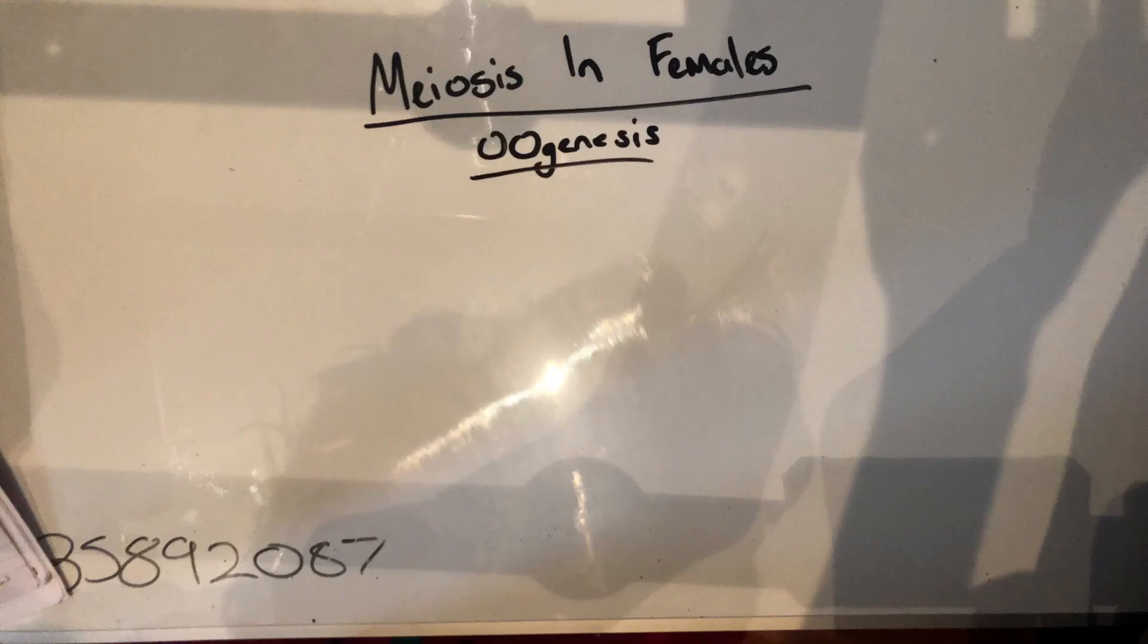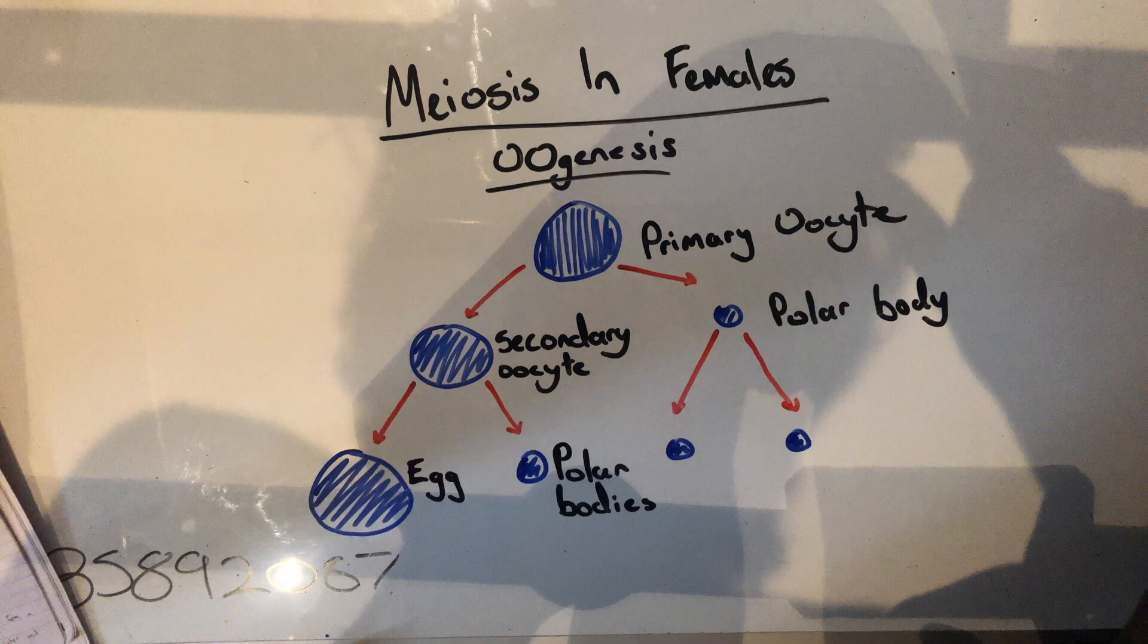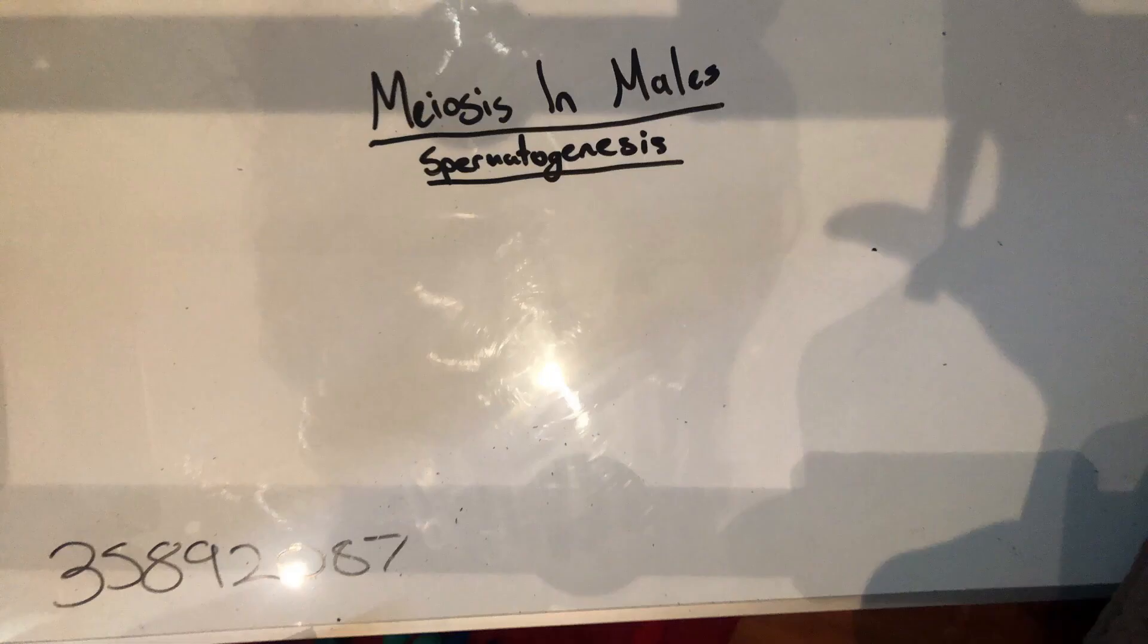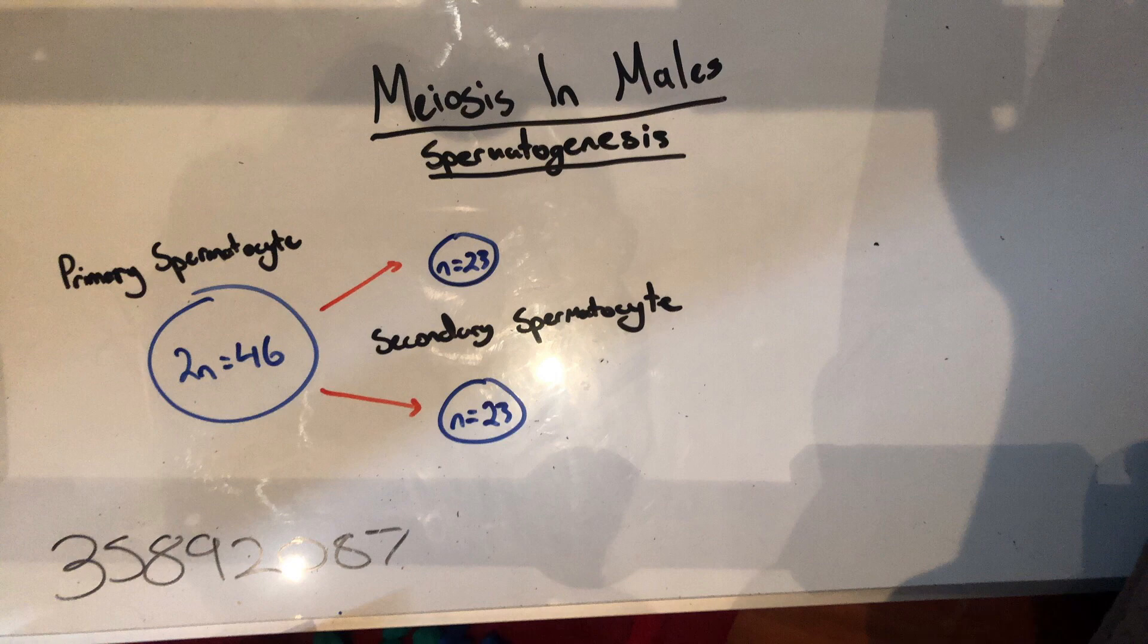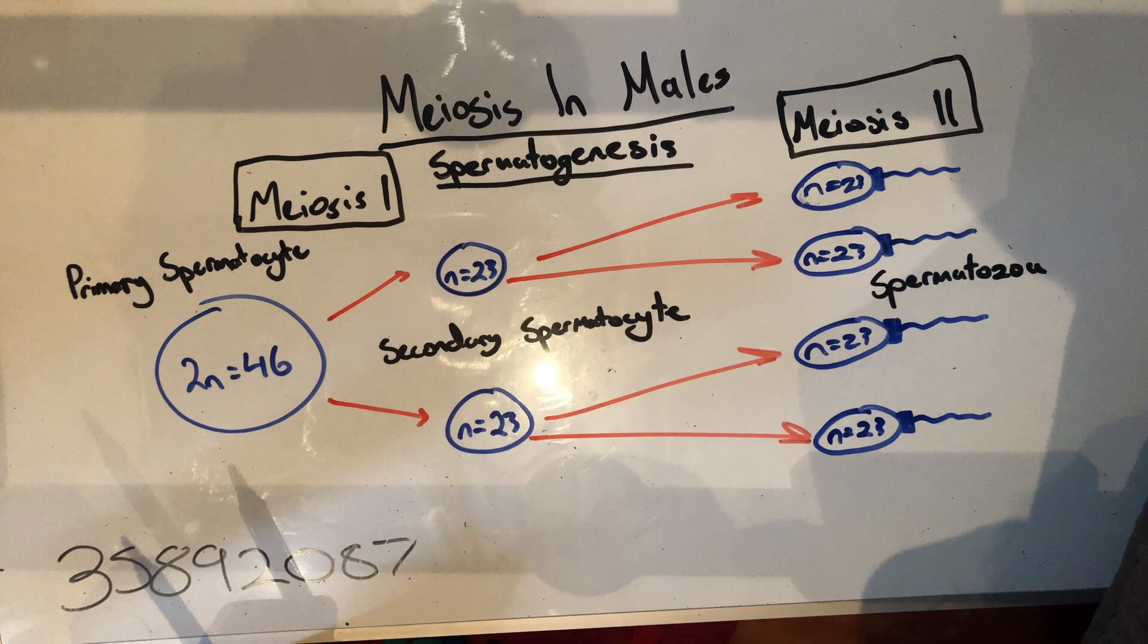Meiosis in females is where the oogonia become primary oocytes, which develop into embryos fertilized by a polar body at the end of meiosis. Meiosis in males develops sperm through the use of spermatogenesis, where the primary spermatocyte divides meiotically. Each secondary spermatocyte divides into equal haploid spermatids by the end of meiosis 2. Spermatids are transformed into spermatozoa.